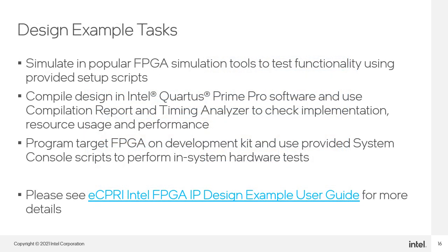Once generated, the design example can be used in several ways. You can run a simulation to review its behavior — simulator setup scripts are provided for popular FPGA simulation tools. You can compile the complete design example and then use the Quartus software's compilation report and timing analyzer to check its implementation, layout within the FPGA and tiles, area consumed, and timing performance. Then you can program the FPGA development kit with the compiled design. System console scripts are provided so you can perform various in-system hardware tests. Please see the design example user guide for more details and instructions on performing these tasks.